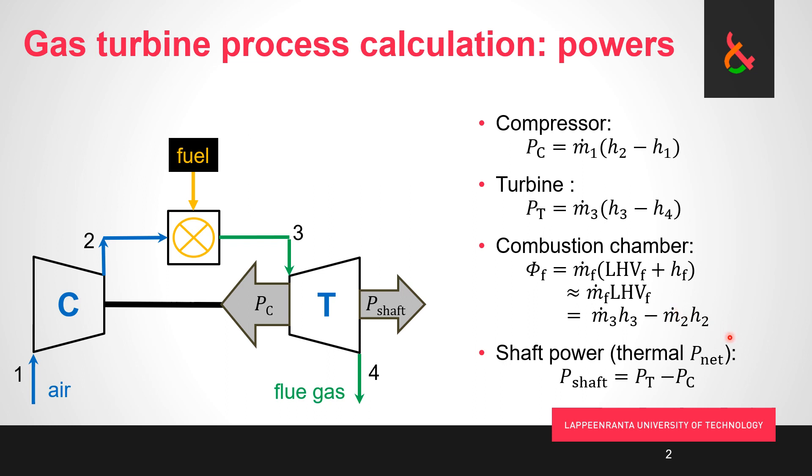And this also has to be mass flow rate times specific enthalpy of the flue gas out minus what is brought in, so mass flow rate of air times enthalpy of air in. Just out of the energy balance this has to be true, what goes in has to equal what goes out.